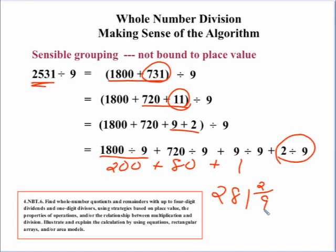So, again, this is just an example that shows one more time the power of the distributive property. That one alternative to your standard algorithm is to use the distributive property and use sensible grouping where you break it down into chunks where the numbers that you're dealing with are divisible by that one-digit divisor.